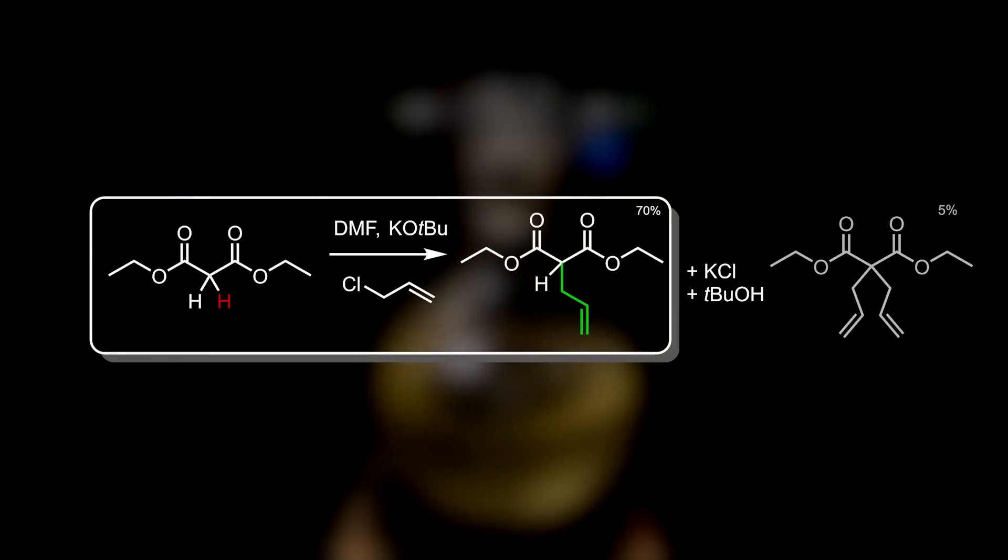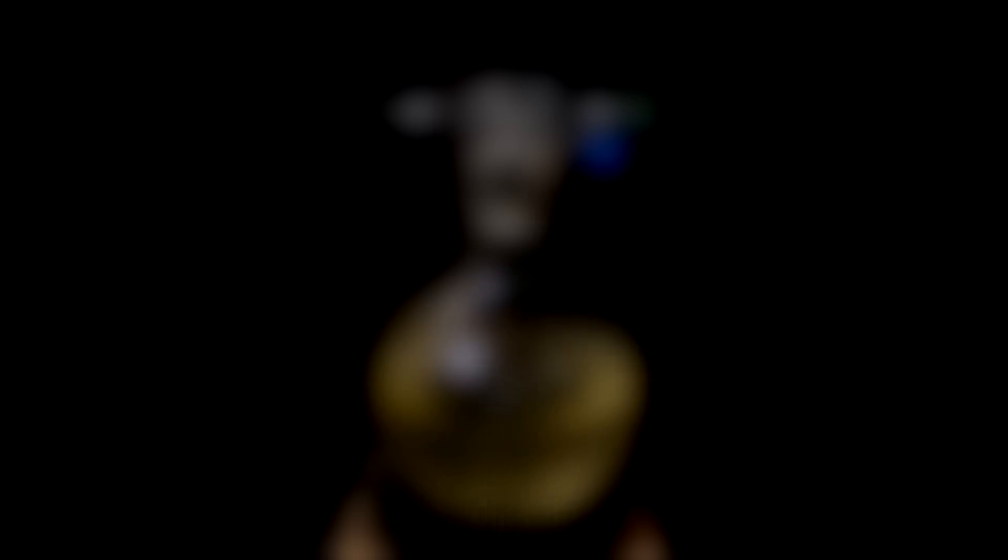In this reaction, diethyl malonate can react to the allyl chloride in the presence of a strong base, giving the mono-allylated product, and also a little bit of the di-allylated product. How it works is that the central carbon of diethyl malonate has two protons that are relatively acidic, which can be deprotonated by a strong enough base, such as potassium tert-butoxide, resulting in this enolate, which can be described by two resonance structures. The enolate can attack the electron-deficient carbon of the allyl chloride adjacent to the chlorine, causing the chlorine to be kicked off, giving the mono-allylated product and potassium chloride.